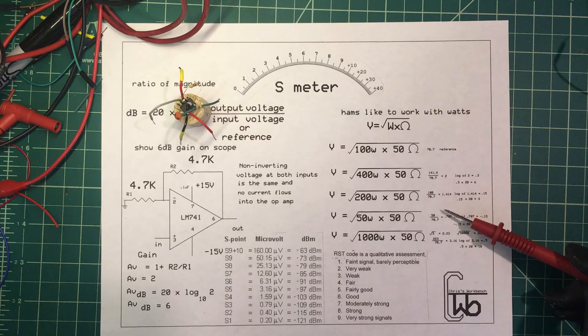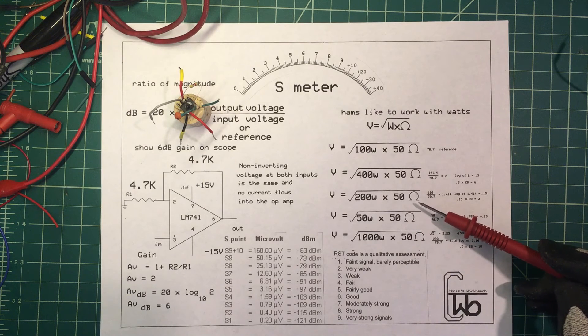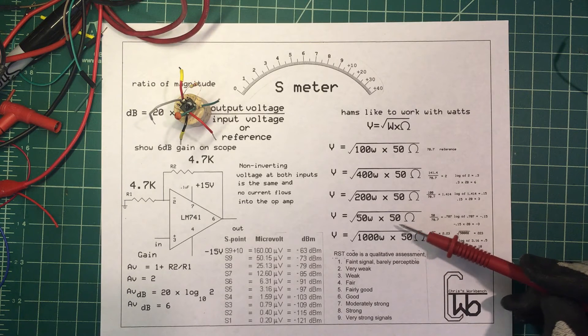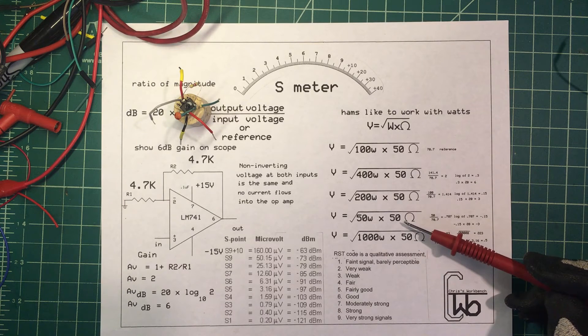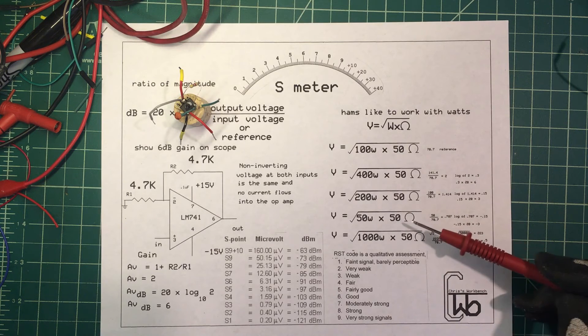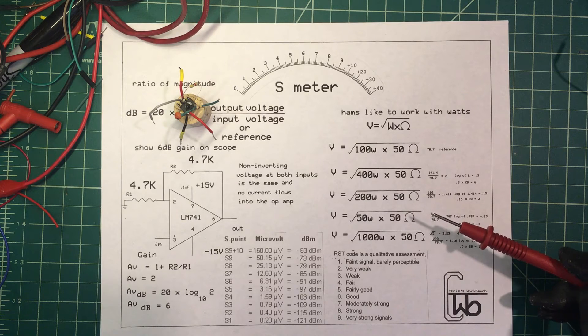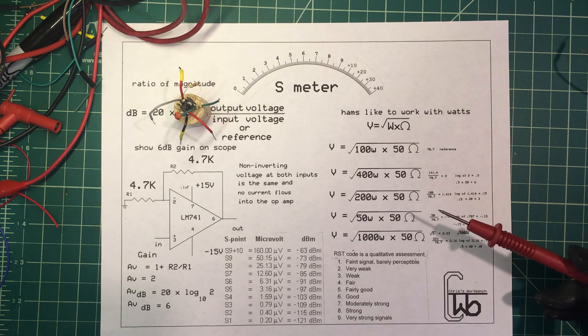Let's go from 100 down to 50 watts. 50 times 50, well the square root of that's got to be 50, and we divide that by our 70.7. That's going to be 0.707. Log base 10 of that's going to be minus 0.15 times 20, or minus 3 dB. We're down 3 dB.